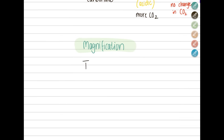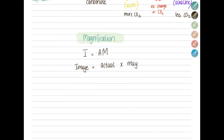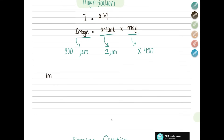Magnification: learn the formula — Image size equals Actual size multiplied by Magnification. For magnification, don't write centimeter or meter; it's always written as 'times', for example ×400. Actual size and image size should have the same units, for example micrometers. Unit conversions to remember: 1 meter = 100 centimeters = 1×10⁶ micrometers = 1×10⁹ nanometers. Always include units in your final answer.